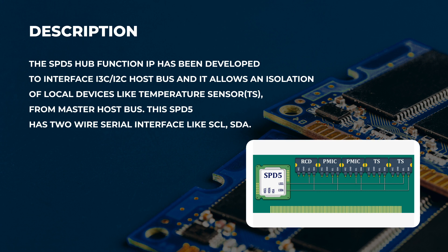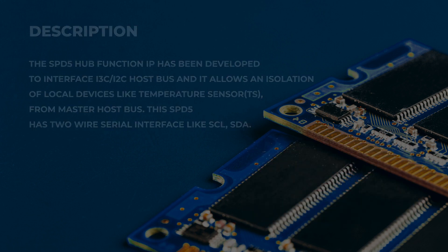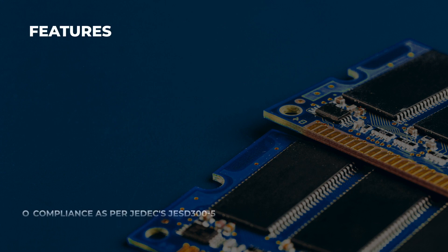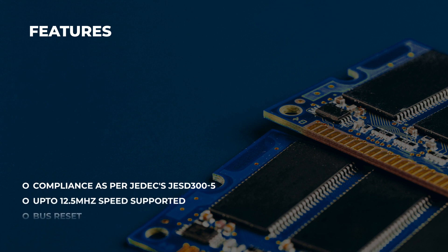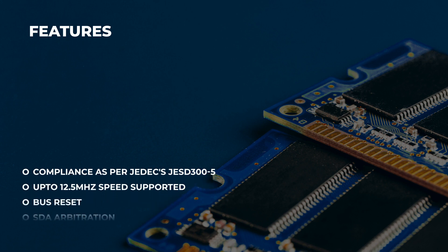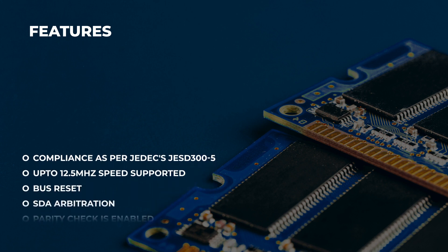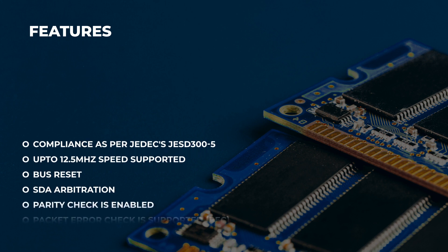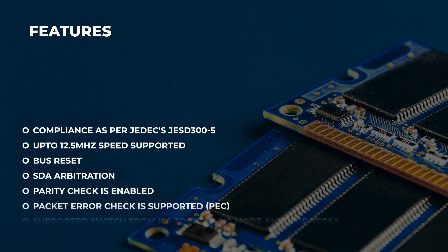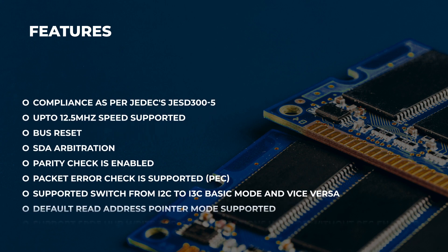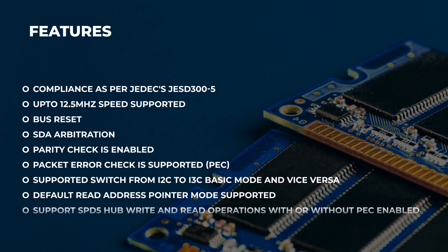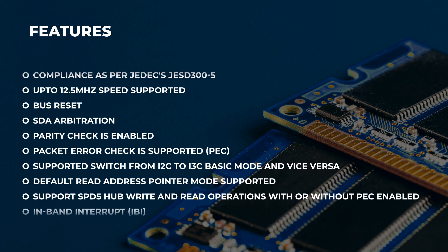The SPD5 has a two-wire serial interface supporting STL and STA. Compliance is per JEDEC JEST3005, with up to 12.5 MHz speed supported. STA arbitration, parity check, and packet error check are supported. Mode switching from I2C to I3C basic mode is supported.